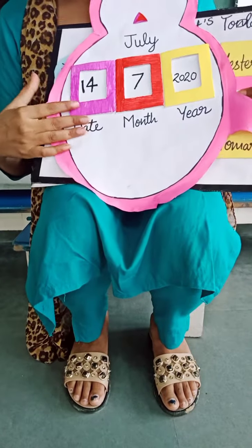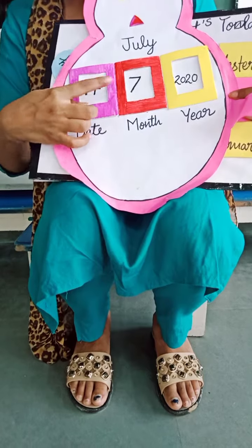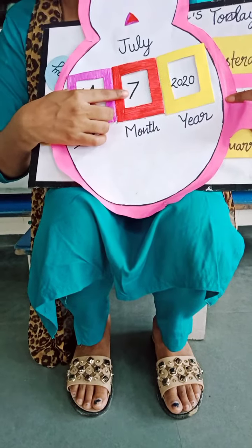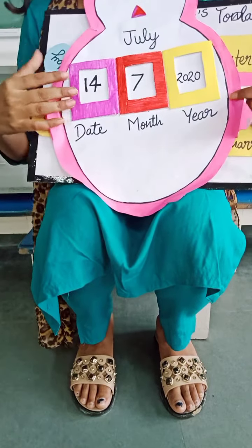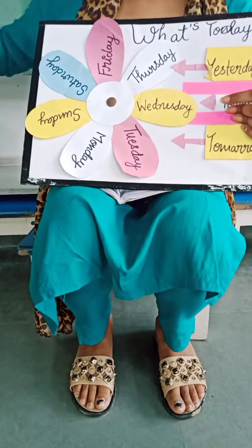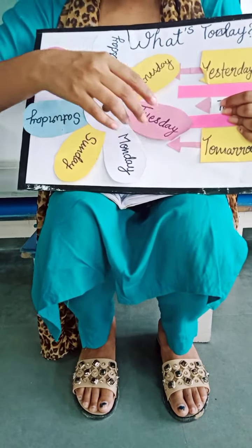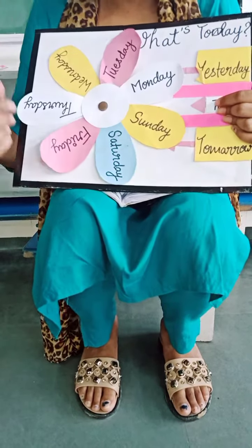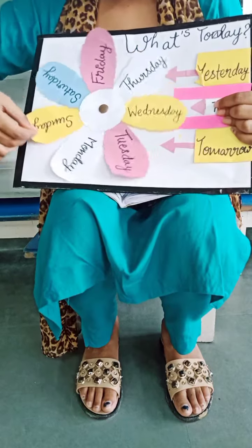Now tell me students, which number is smallest: 14 or 7? 7 is the smallest number and 14 is the biggest number. Good. Now tell me, what is the day today? Today is Tuesday, and yesterday was Monday, and tomorrow will be Wednesday.